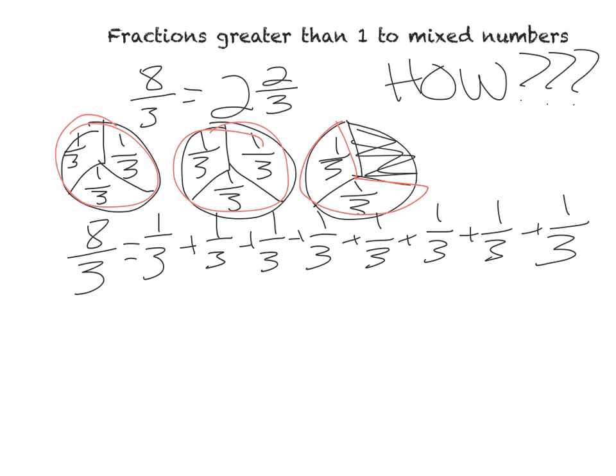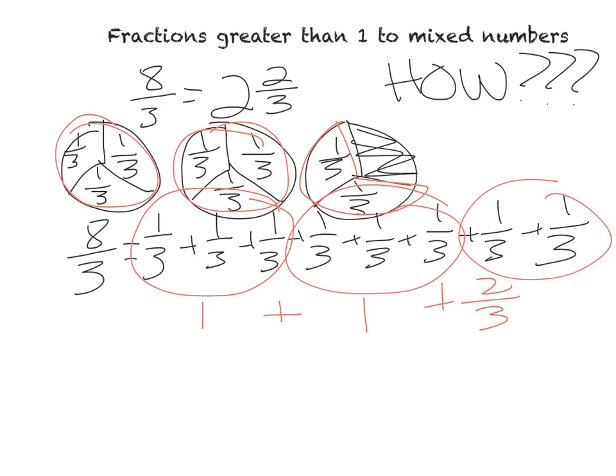And then I can group them into groups of whole numbers. Let's pull the whole numbers out. I've got one, and I've got two, and then I've just got that two-thirds still hanging out there. So, there's my one and one and two-thirds, which equals two and two-thirds.